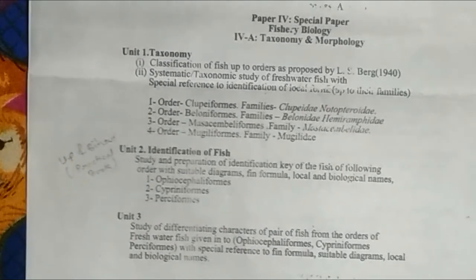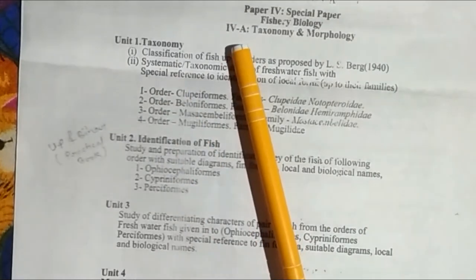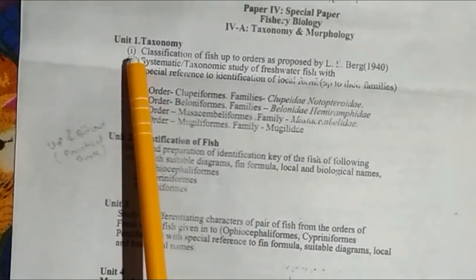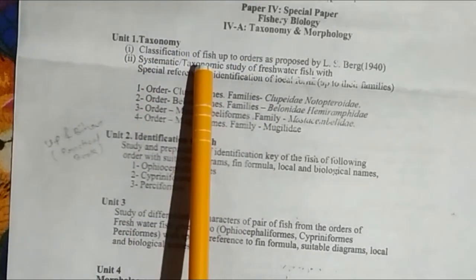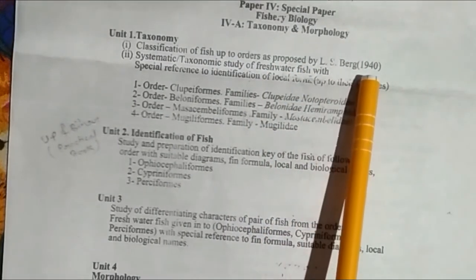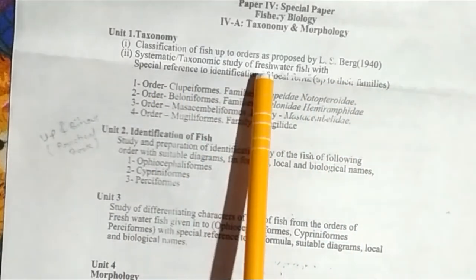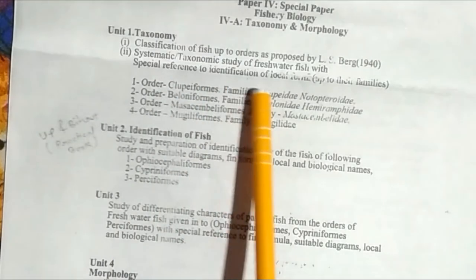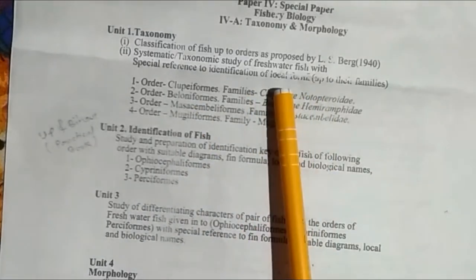I have selected Fishery Biology as my fourth paper. In this we have to study the taxonomy and morphology of fish. Unit First covers taxonomy and classification of fish up to orders as proposed by Leo Berg (1940), and a systematic and testimonial study of freshwater fish with special reference to identification of local fish.